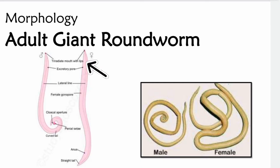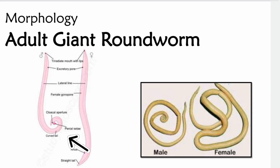On the left side you can see the organs: the tri-radiate mouth with lips — one dorsal and two ventral — the excretory pore, lateral line, female gonopore, cloacal aperture, penile spicule, curved tail in the male, and straight tail with anus in the female.